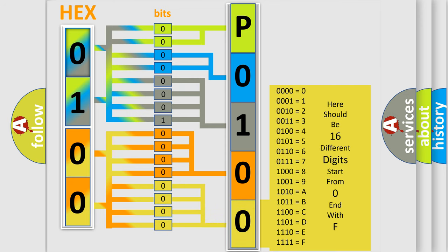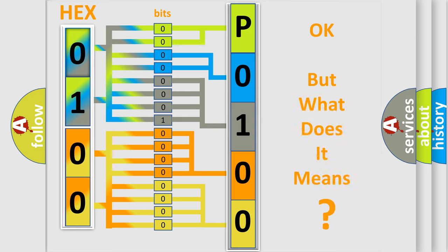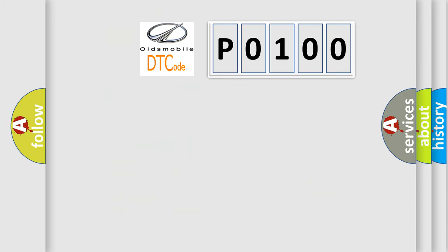We now know how the diagnostic tool translates received information into a more comprehensible format. The number itself does not make sense if we cannot assign information about what it actually expresses. So, what does the diagnostic trouble code P0100 interpret specifically for Oldsmobile car manufacturers?